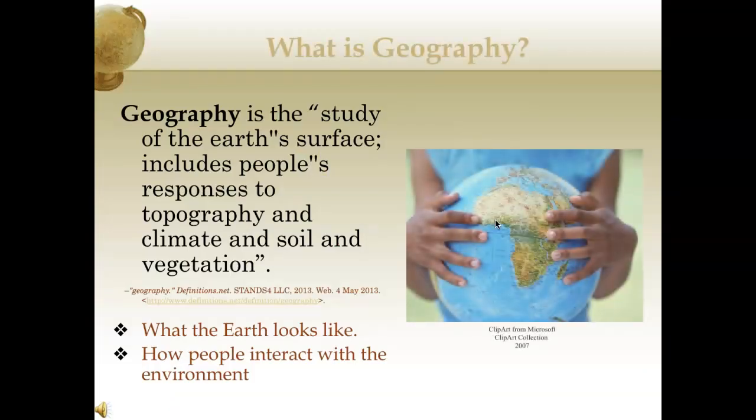What is geography? Geography is the study of the Earth's surface. It includes people's responses to topography and climate and soil and vegetation. We think of geography often as being places in the world like landforms, mountains, rivers, and so forth. But really, geography is pretty much what the Earth looks like and how people interact with the environment too.